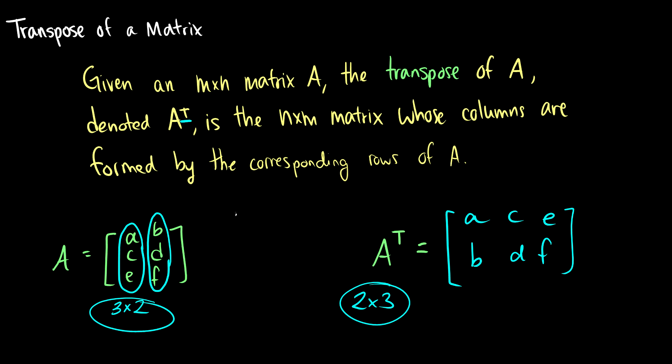That is A_ij becomes the new A_ji. So as you can see, this F here is A_32, and A_23 is F. So these i's and j's, they switch.